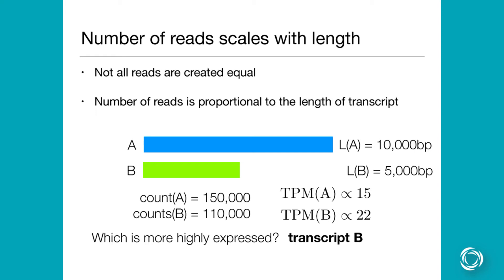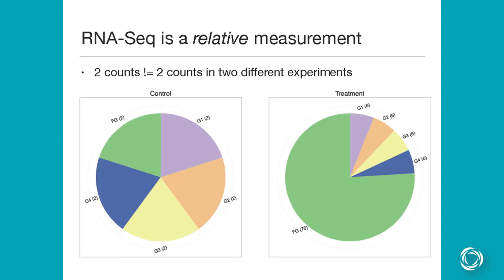you chop it up, and then you expect just because it's longer that you would have seen more reads coming from it. Okay, so it turns out in this case that even though we saw more counts at transcript A, transcript B has higher expression.